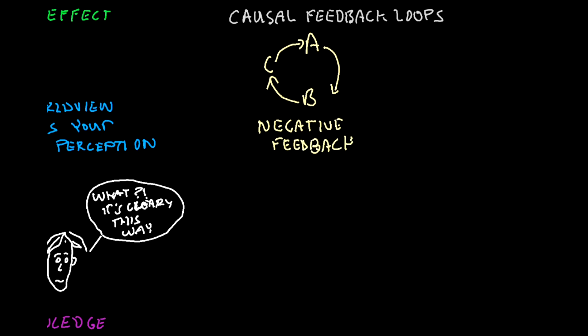There are two kinds of feedback loops, negative feedback, which despite the name, are actually a good thing. Systems that are stable and in homeostasis are in a negative feedback loop.